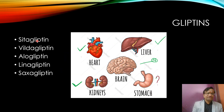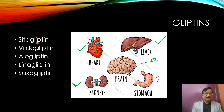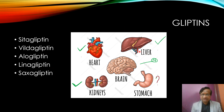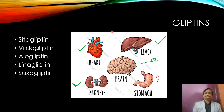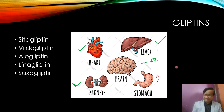Examples of Gliptins include Sitagliptin, Vildagliptin, Alogliptin, Linagliptin, and Saxagliptin. These drugs are good for the heart, good for the liver, good for the kidneys, good for the stomach, and good for the brain. There may be some fullness at the start, but otherwise everything is safe with Gliptins.